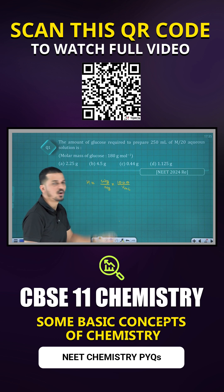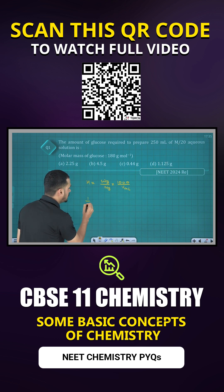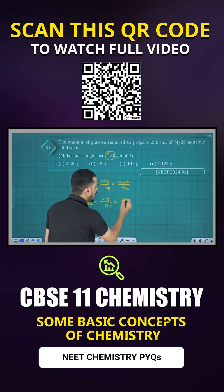50 percent is over, now we substitute the values. Molarity they given is 1/20. That equals given mass of solute Wb divided by molar mass of glucose, which is 180, into thousand, divided by volume in milliliter which is 250 ml. Now we calculate for Wb. We can cancel this one, we can cancel this one.